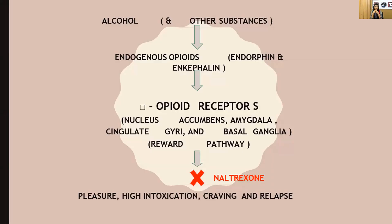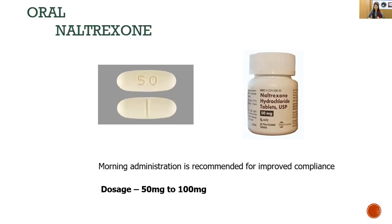Naltrexone is an opioid antagonist. The mesolimbic reward pathway is responsible for dependence and craving, mediated by endogenous opioids called endorphins and enkephalins. Naltrexone blocks the effect of these endogenous opioids, as well as exogenous opioids like morphine and heroin. Similar chemical compounds — enkephalins and endorphins — are present in the brain, and naltrexone blocks their effects. Oral naltrexone tablet morning administration is recommended for improved compliance; the dose is 50–100 mg.